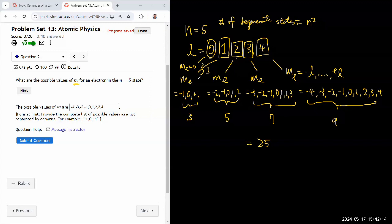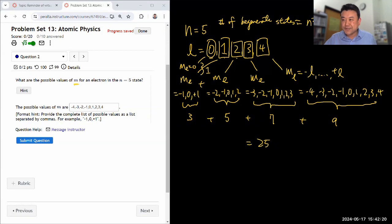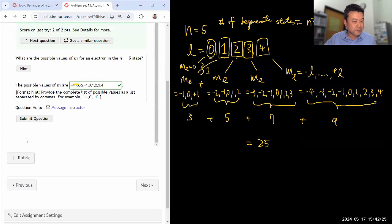Yep, I get 25 total possible states, 5 squared. But anyways, that's not what the question is asking. Question is just asking for this bit. Did that submit the question?